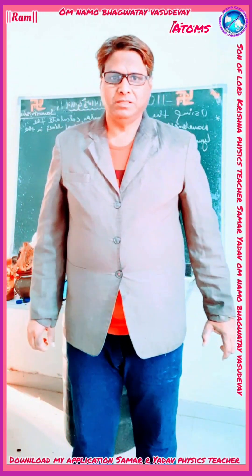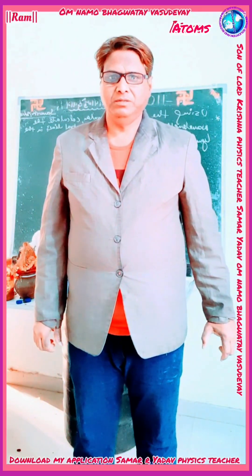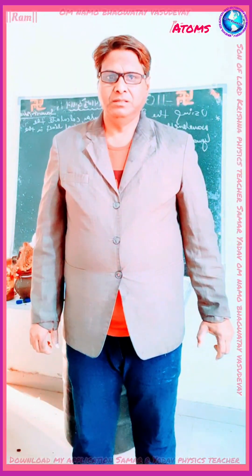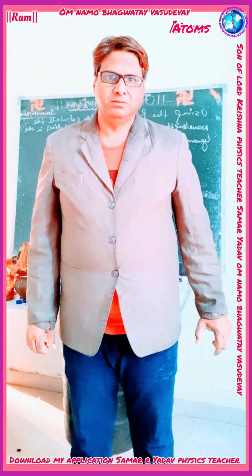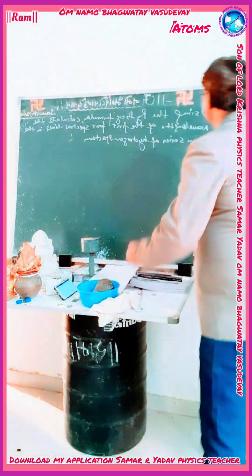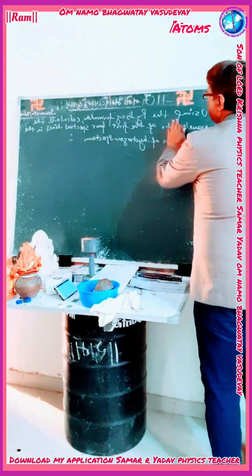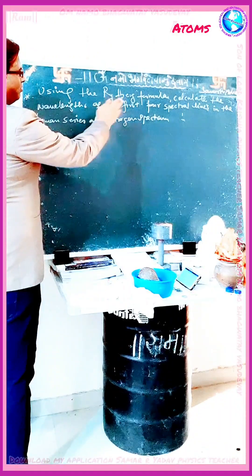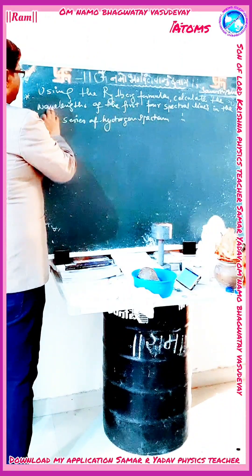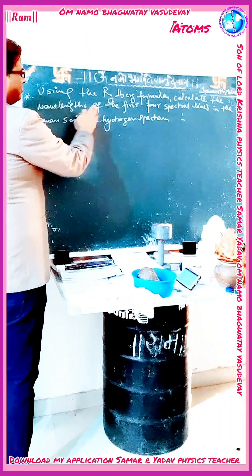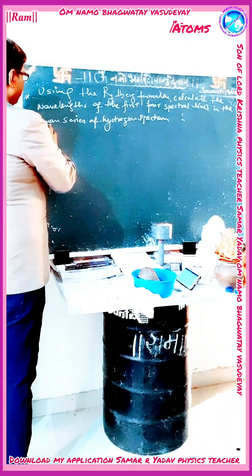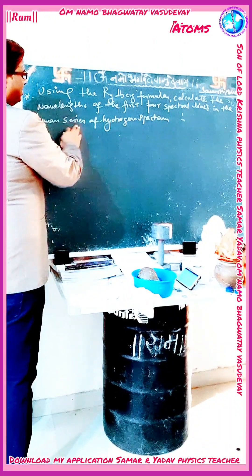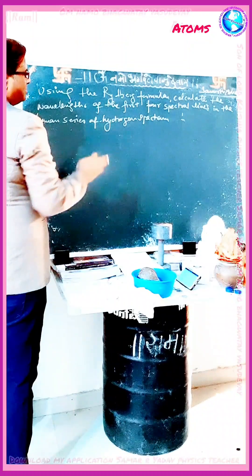Today in our chapter 8, numerical C1. Using the Rydberg formula, calculate the wavelength of the first four spectral lines in the Lyman series of hydrogen spectra.